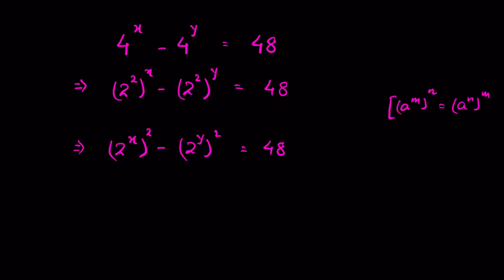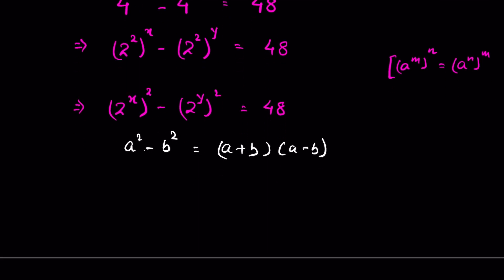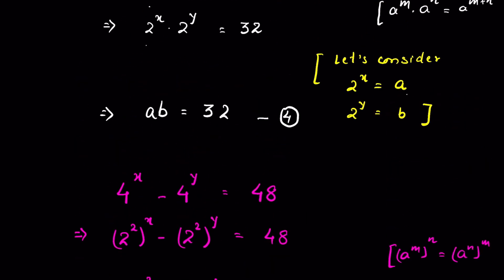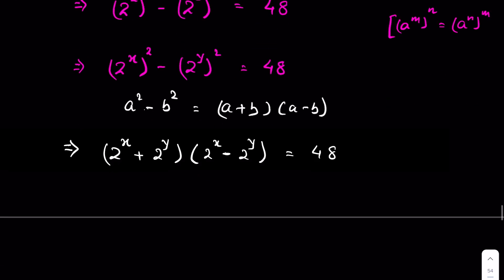This is in the form a² minus b², which equals (a+b)(a-b). Applying this formula, we get (2^x + 2^y)(2^x - 2^y) equals 48. Since 2^x = a and 2^y = b, we write (a+b)(a-b) equals 48.